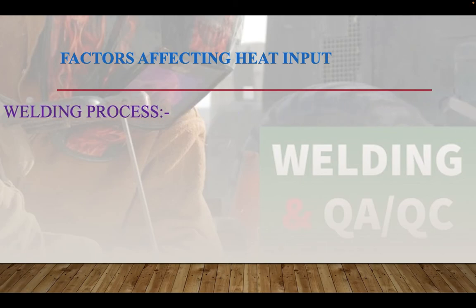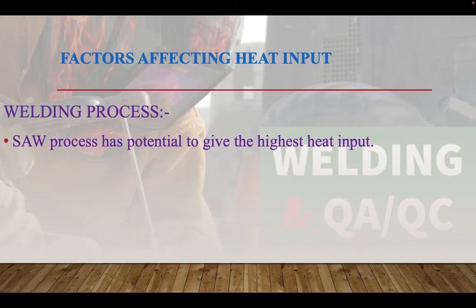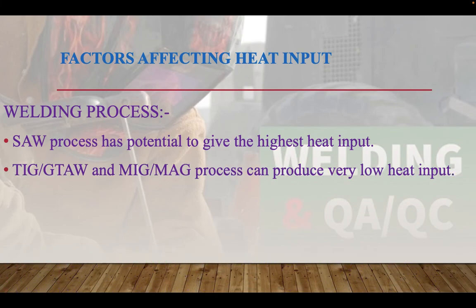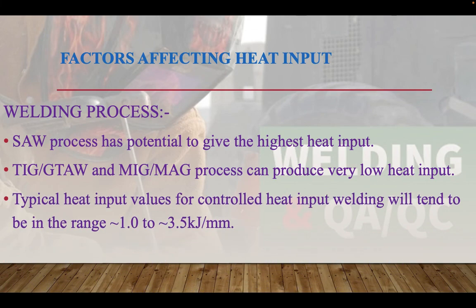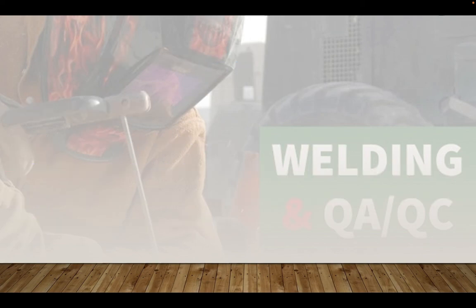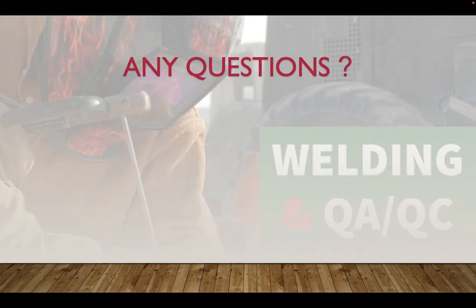Regarding welding process: SAW has the potential to give the highest heat input, while TIG (GTAW) and MIG processes can produce very low heat input. Typical heat input values for controlled heat input welding tend to be in the range of 1 to 3.5 kJ per mm. Thank you everyone for watching.